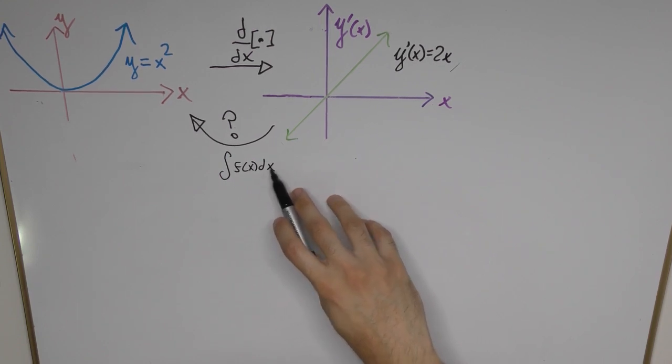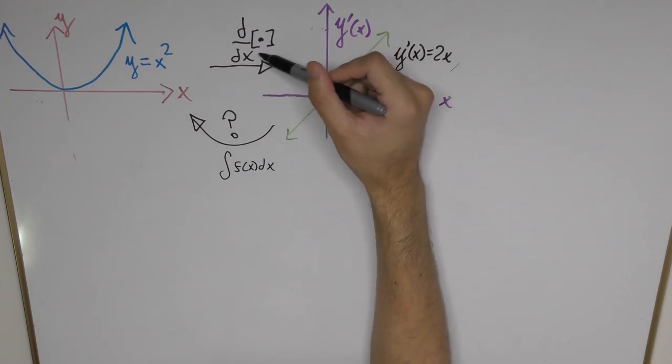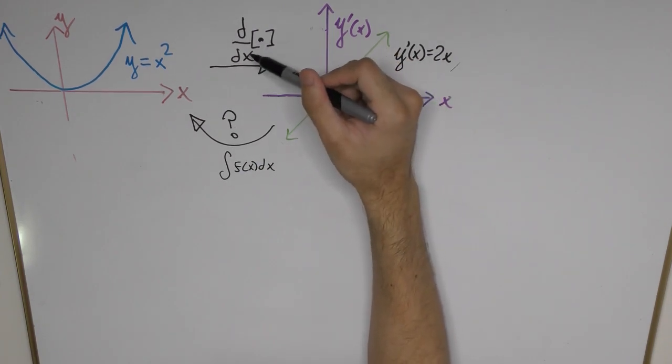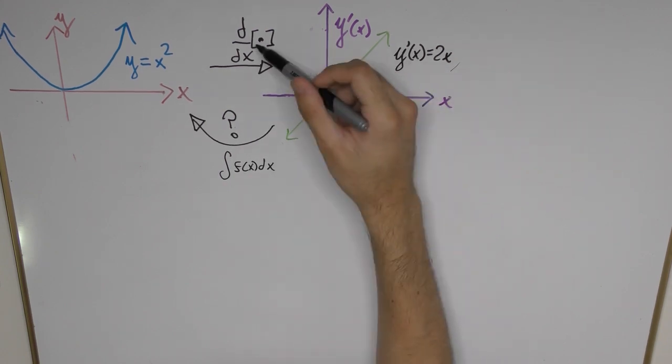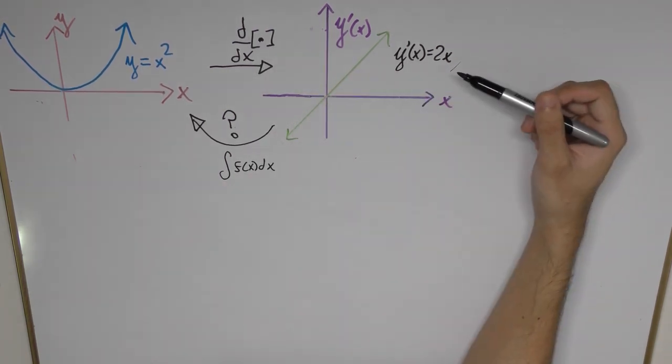So this is essentially the same thing that comes into play for the derivative operator where we're taking a very infinitesimally small change of that function with respect to the variable x.